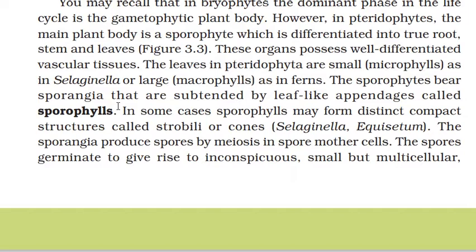Sporophytes bear sporangia on leaf-like appendages called sporophylls. In some cases, sporophylls may form distinct compact structures called strobili or cones — for example, in Selaginella and Equisetum.